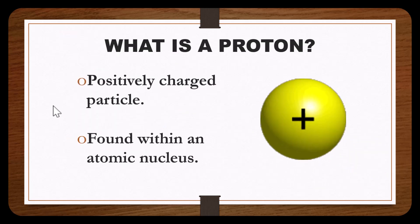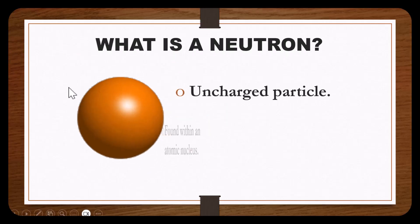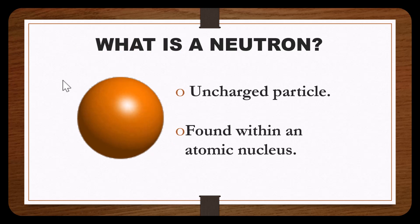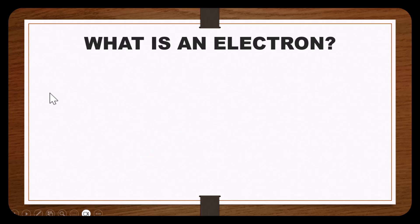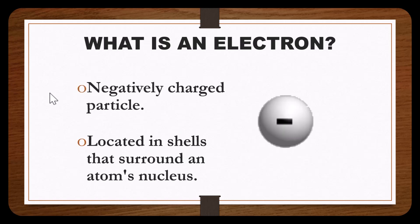A proton is a positively charged particle, and is found within the atom's nucleus. A neutron is an uncharged particle, and also found within the atom's nucleus. An electron is a negatively charged particle, located in the shells that surround the atom's nucleus.